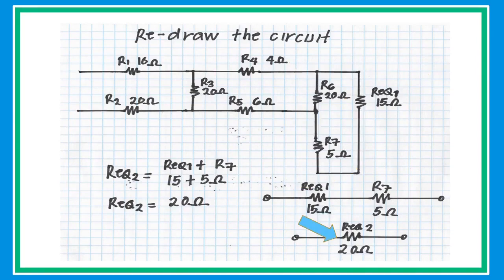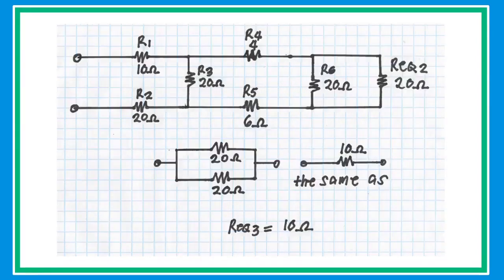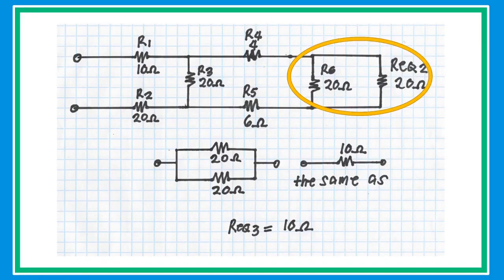Collapse and redraw the circuit again. In this new redrawn circuit, R6 — 20 ohms — and R equivalent — 20 ohms — are connected in parallel. Since they have the same value, just get half to get an equivalent resistance of 10 ohms. Collapse the circuit and redraw again.